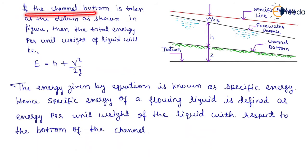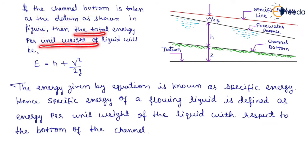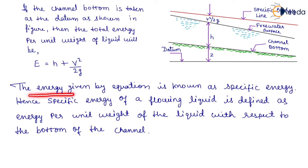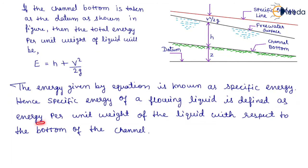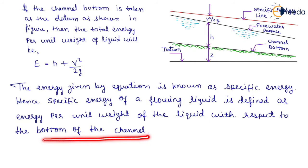If the channel bottom is taken as the datum, as shown in the figure, then the total energy per unit weight of liquid will be equal to H plus V² upon 2G. The energy given by this equation is known as specific energy. Hence, specific energy of a flowing liquid is defined as energy per unit weight of the liquid with respect to the bottom of the channel.